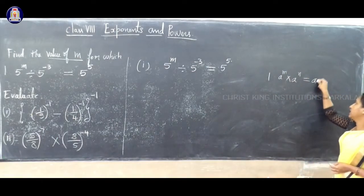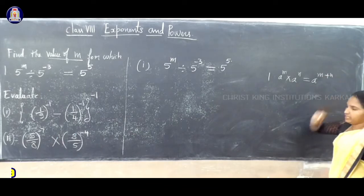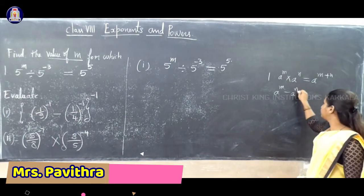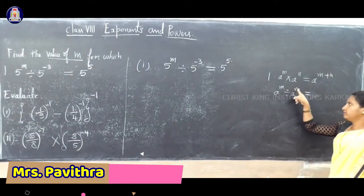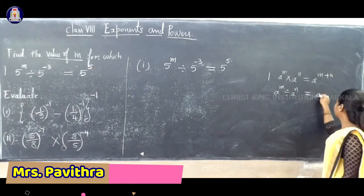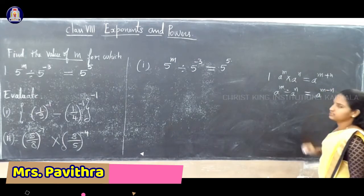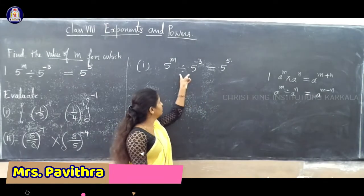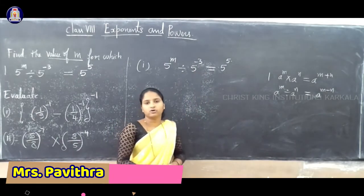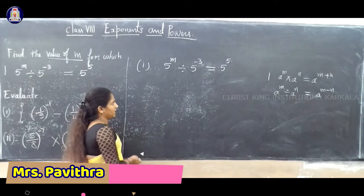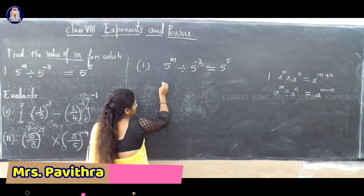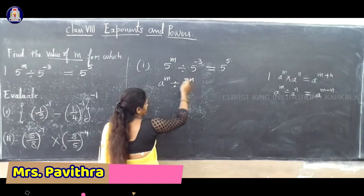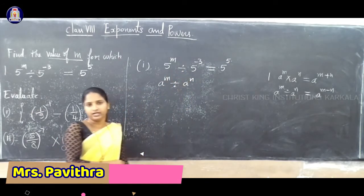A power m into A power n can be given as A power m plus n. And A power m divided by A power n — the same base, power difference — you must use A power m minus n. That is the second law: A power m divided by A power n form. Because same base, power is different. Clear?